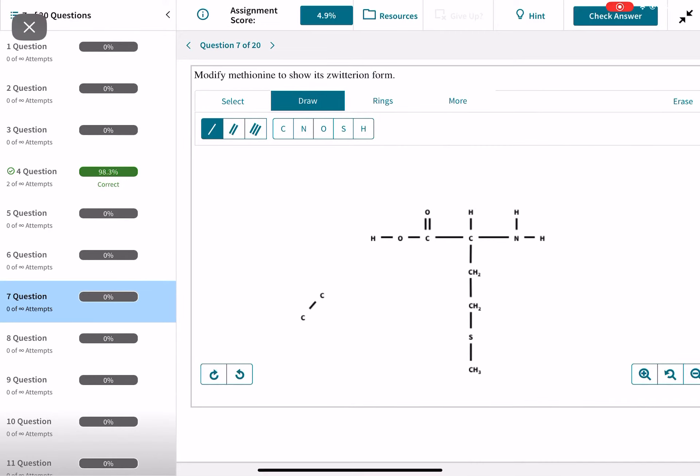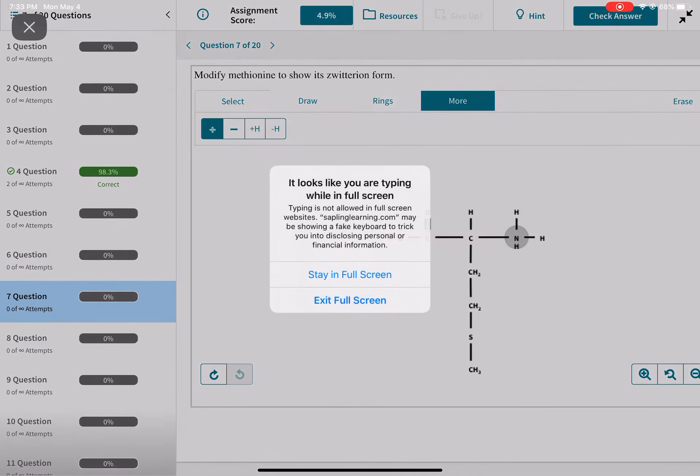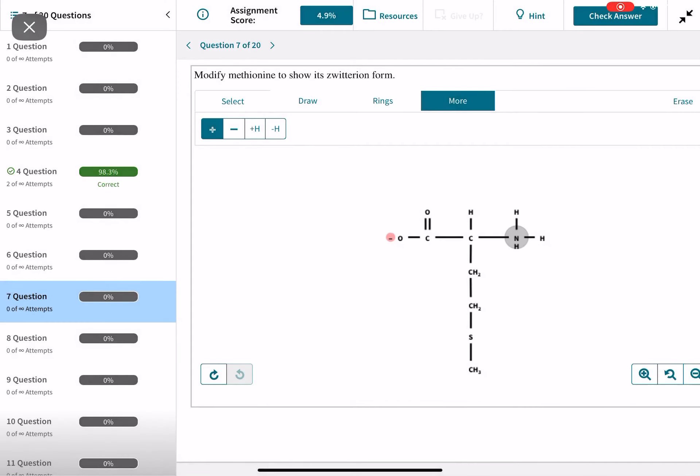So for question number seven, it asks you to modify the structure to show its zwitterion form. And this amino acid is written mirror image from the way that I would normally write it. But remember in the zwitterion form, we have COO-, so you want to fix that, COO-, and then you also have NH3+, so you want to fix that as well.